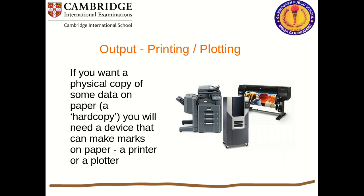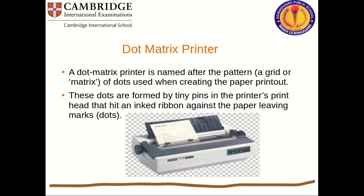For getting information on a hard copy, we need printing and plotting. Hard copies are mostly being replaced by digital copies, but sometimes we still need information on hard copy for display on walls or for advertisement. You need a device that can make marks on paper — a printer or a plotter. Different types of printers include dot matrix, laser, and inkjet printers, and we will also learn about plotters and the differences between them.